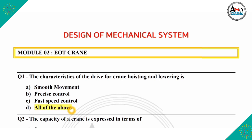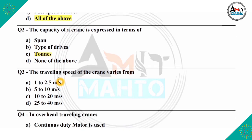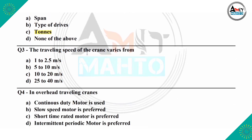The correct answer is all of the above. The second question is: the capacity of the crane is expressed in terms of span, types of driver, turns, or none of the above. The capacity of crane is always expressed in terms of turns. The next question is: the traveling speed of the crane varies from 1 to 2.5 m/s, 5 to 10 m/s, 10 to 20 m/s, or 25 to 40 m/s.